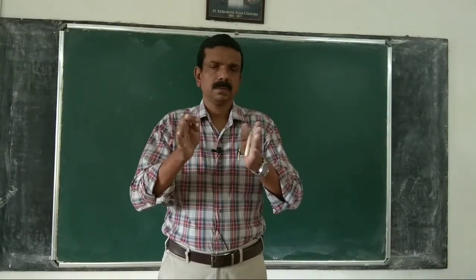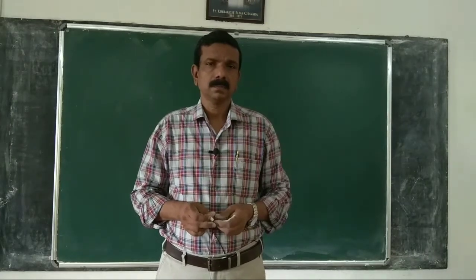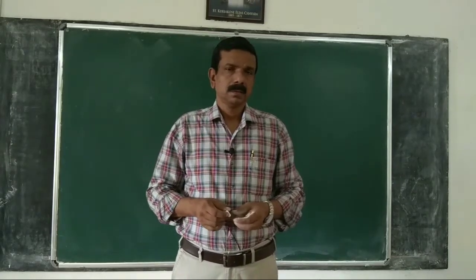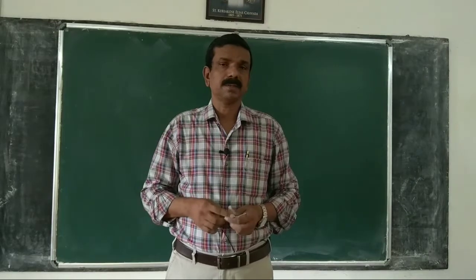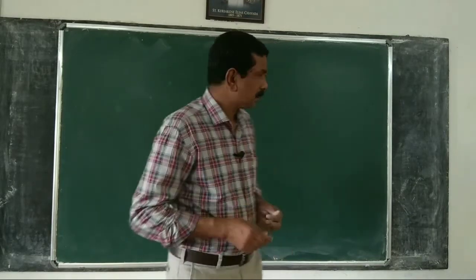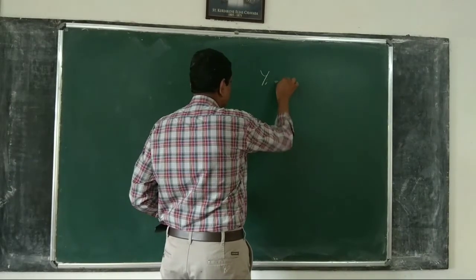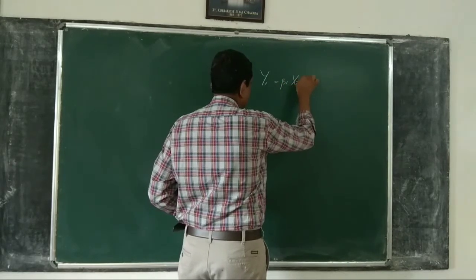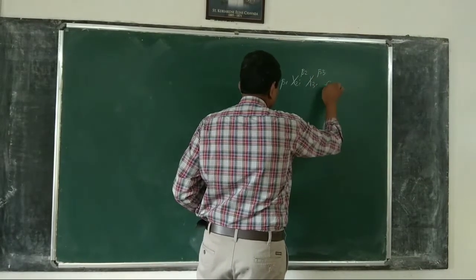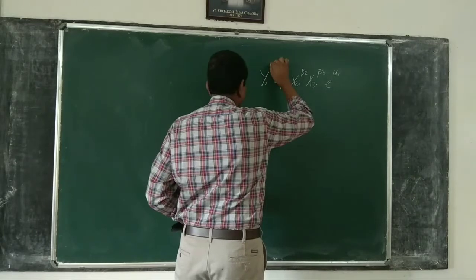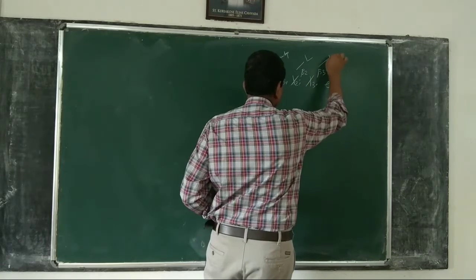The first functional form we consider is one familiar to you, namely the Cobb-Douglas production function. The Cobb-Douglas production function in stochastic form can be written as: y_i = beta1 * x2i^beta2 * x3i^beta3 * e^ui, where y is output, x2 is labour, and x3 is capital.